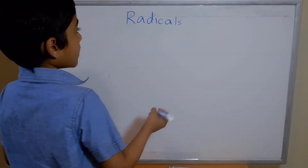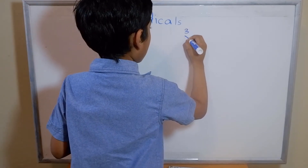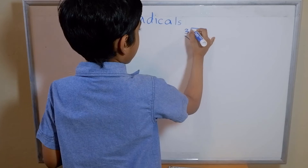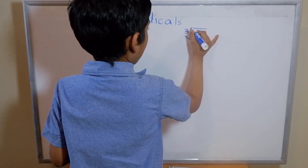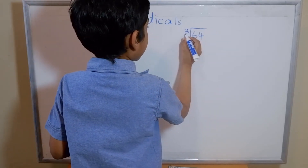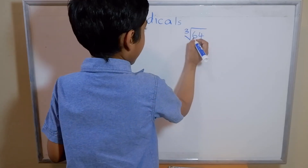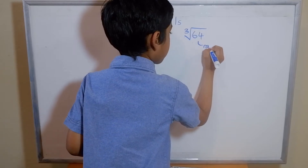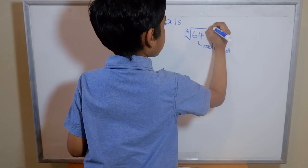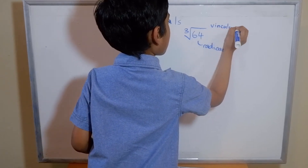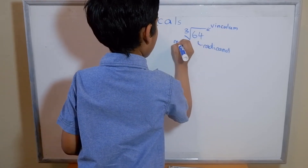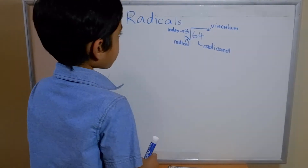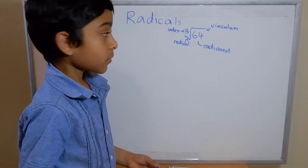Now let's look at the parts of a radical symbol. Take for example the cube root of 64. The check-mark-shaped part is called the radical sign. The line across the top is called the vinculum. The number tucked inside the check mark is called the index, and the number inside the radical symbol is called the argument of the radical. These are all the parts of a normal radical.